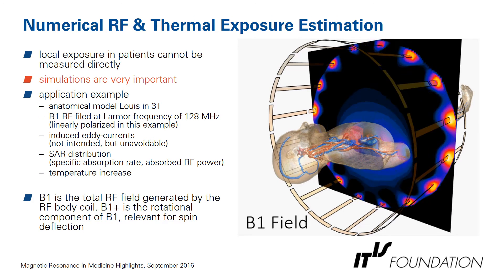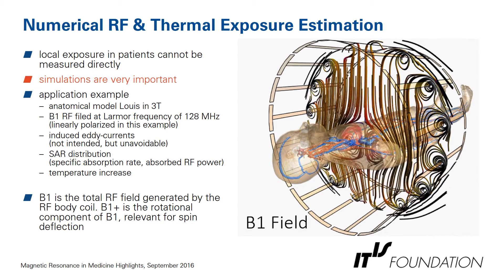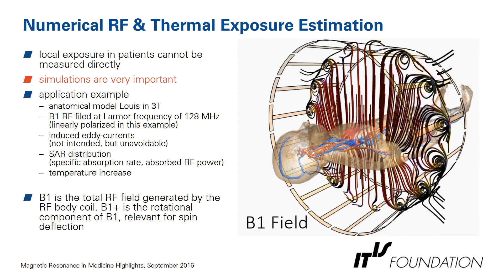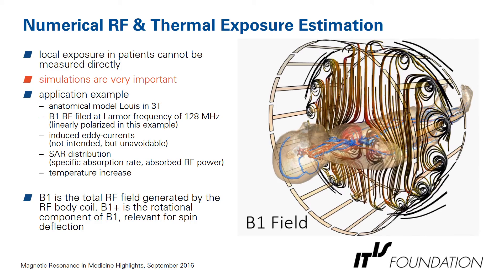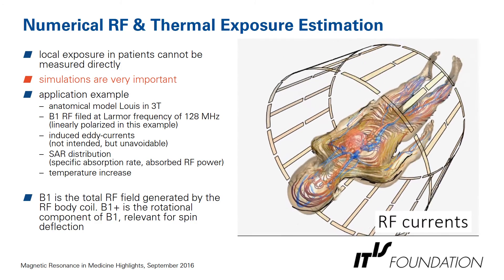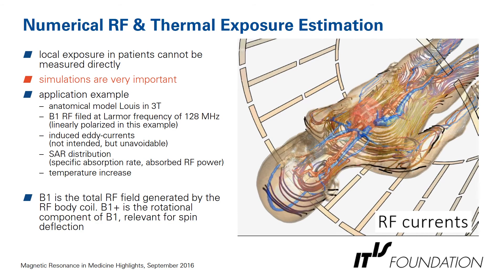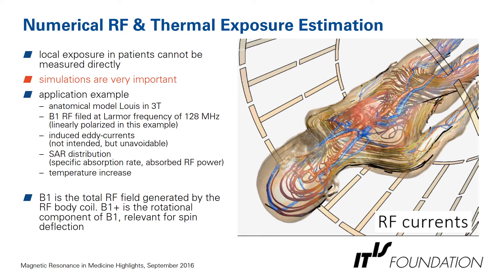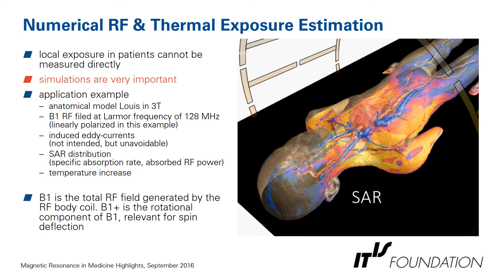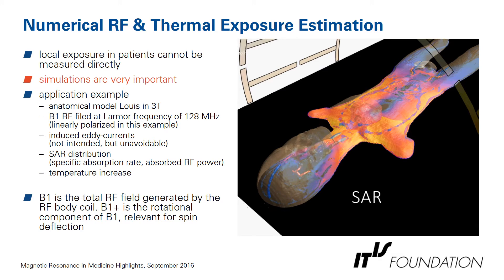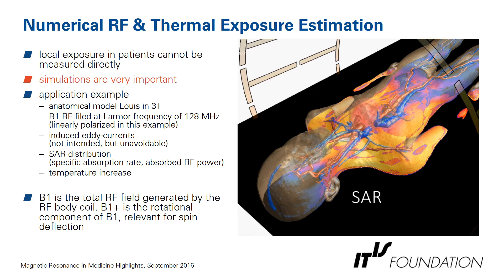This is with the anatomical model LUIS in a 3 Tesla birdcage coil. What you see now is the B1 field — it's a linearly polarized field, and this is the one responsible for spin deflection, so for imaging. However, if we have a varying B field that induces eddy currents, these are not intended or wanted, but they're unavoidable — so we have to deal with them. They're circular and increase with radial distance from the center.